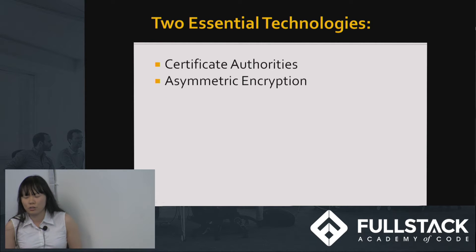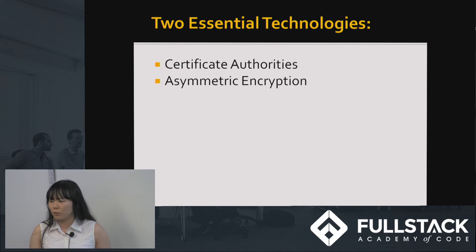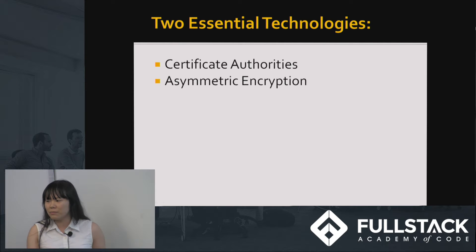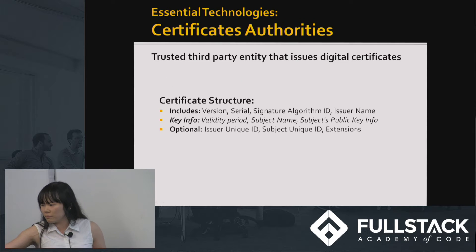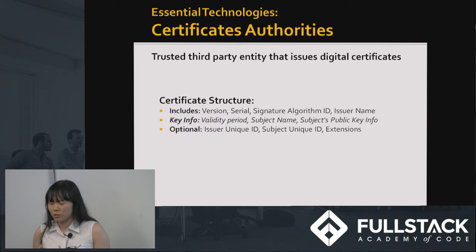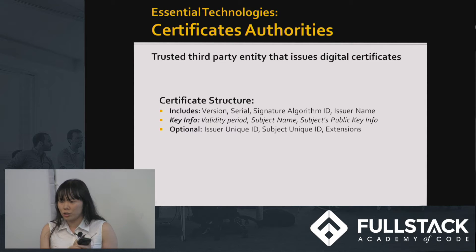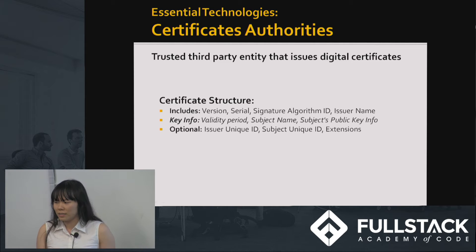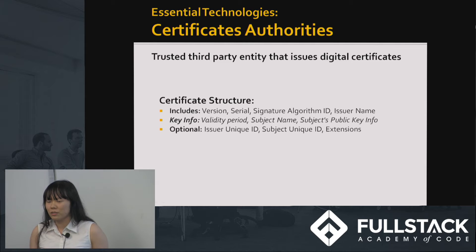There are two essential technologies that enable SSL and TLS to work. The first is certificate authorities and the second is asymmetric encryption. Certificate authorities are basically a trusted third-party entity that issues digital signatures. These usually include the version of the certificate, the serial of that certificate, the signature, and the issuer name.